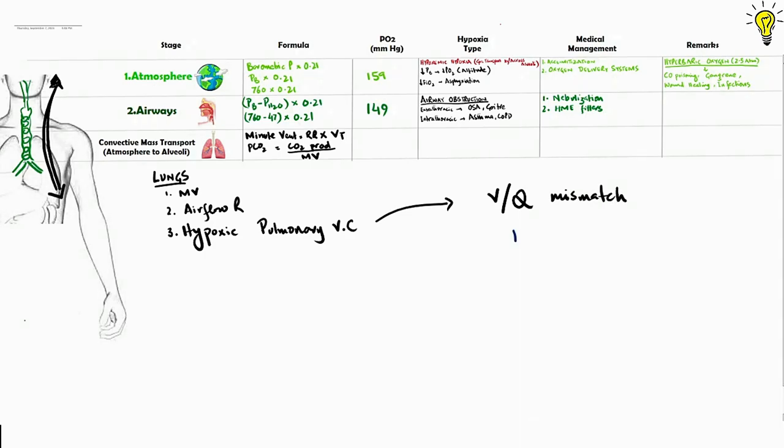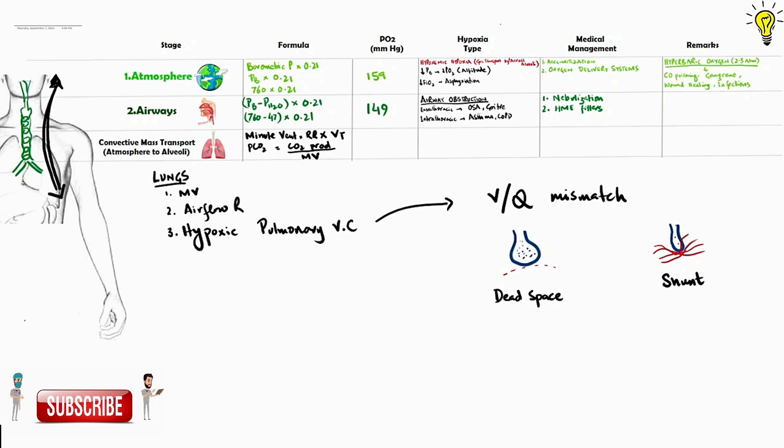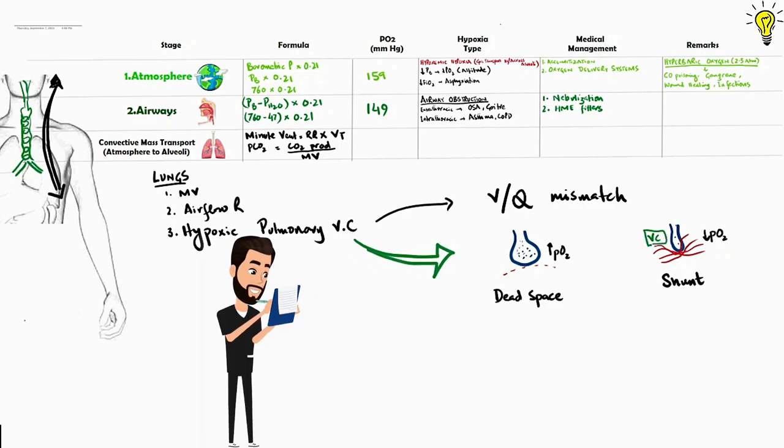For example, we have a well ventilated alveolus with poor perfusion called dead space, and we have a collapsed alveolus with less ventilation, but perfusion is good, and this is called shunt. Due to low pressure of oxygen in collapsed alveolus, hypoxic pulmonary vasoconstriction will occur here, and this will divert the blood away from collapsed alveolus and towards better ventilated alveoli for good gas exchange.